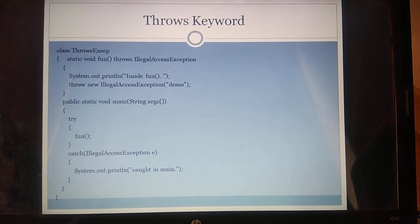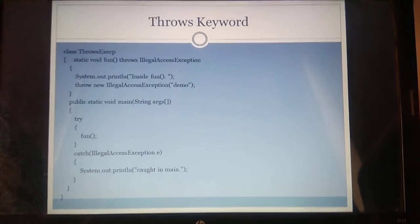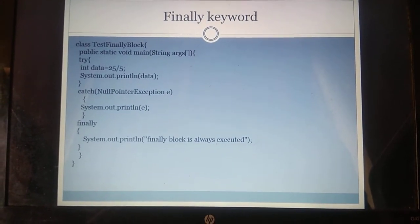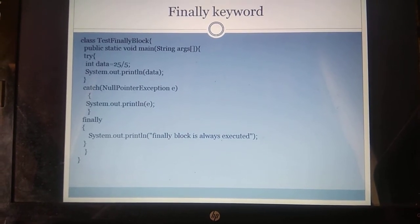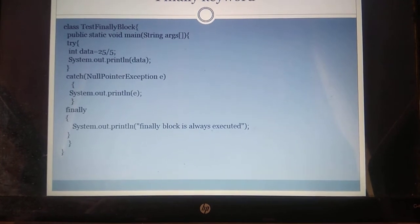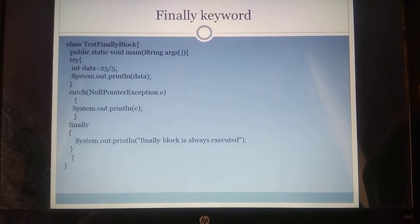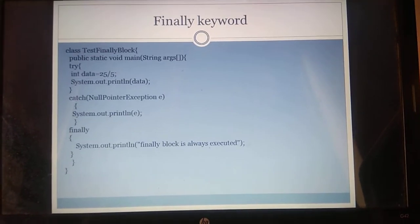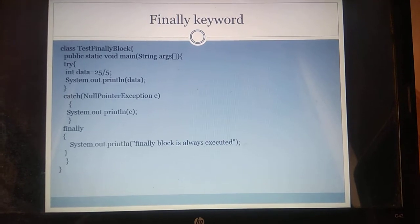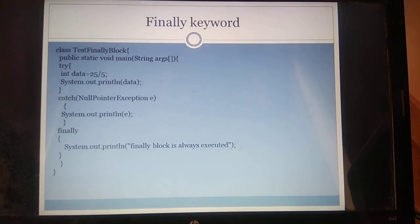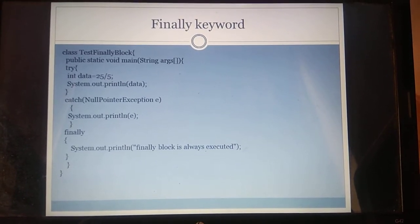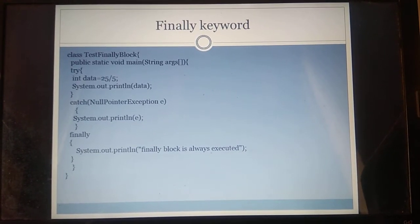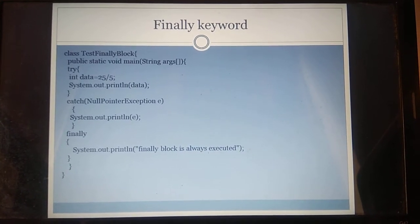Next we have the finally block. Finally is a keyword, and the finally block is written after try and catch. We have three blocks: try, catch, and finally. The code you want to execute goes in the try block. If there is an exception, it is thrown to the catch block, which prints the exception. The finally block executes whether or not there is an exception — it runs every single time.